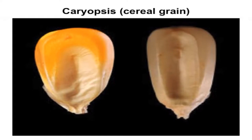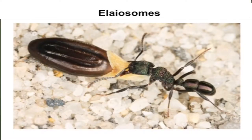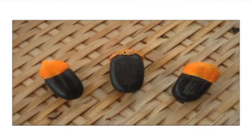Caryopsis is a dry nut-like fruit typical of monocots — for example, rice, sorghum, maize, etc. Elaiosomes are specialized dispersal appendages present in some fruits. They help in dispersal of such fruits by ants. The dispersal by ants is known as myrmecochory, and elaiosomes contain pheromones that attract the ants. The ants disperse the fruits and thereby help in dispersal of the species. One such example is the violets.